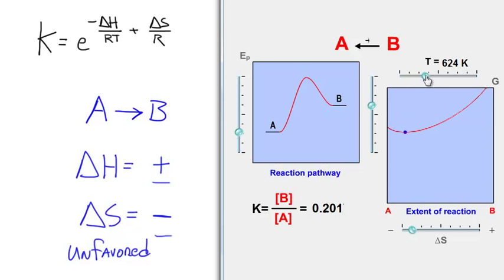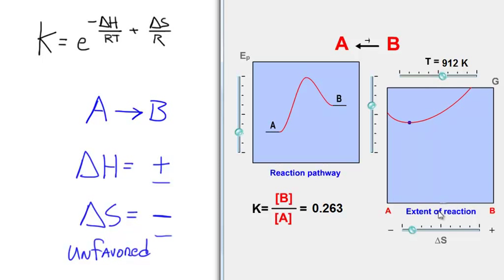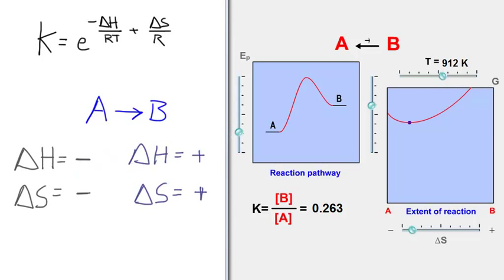If I increase T, I can make that equilibrium point shift a little bit, but I can never get it to cross the line to be product favored versus reactant favored. Now let's take a look at the two other situations where we do have temperature dependence — where the equilibrium constant is very temperature dependent in the sense that the reaction could go from reactant favored to product favored, or vice versa.